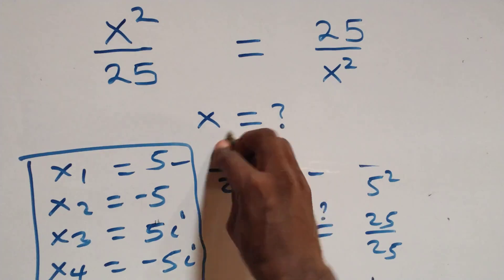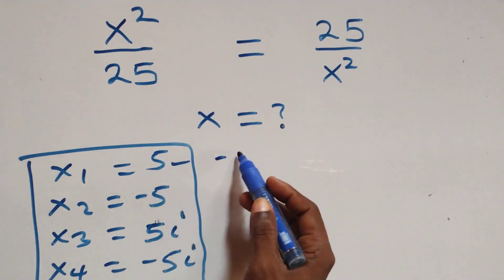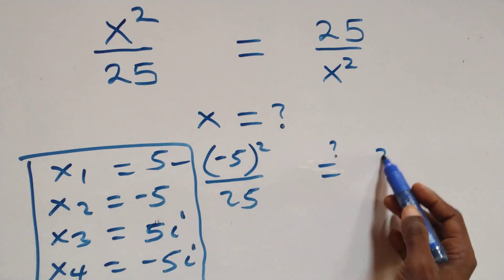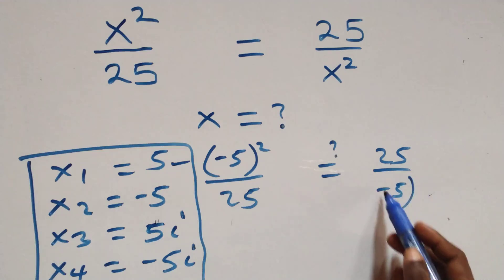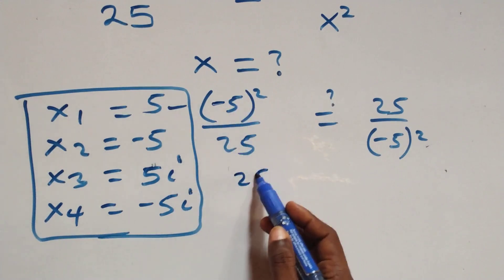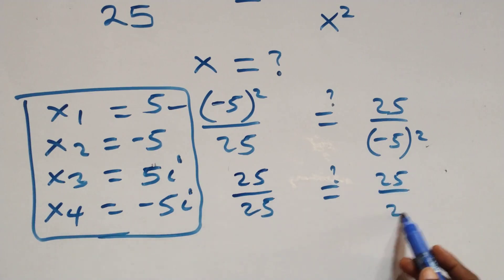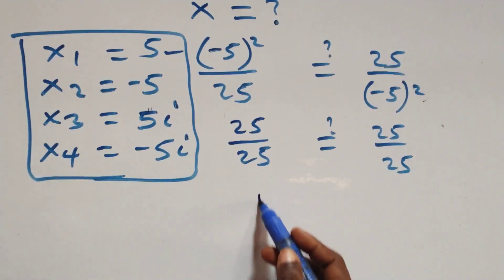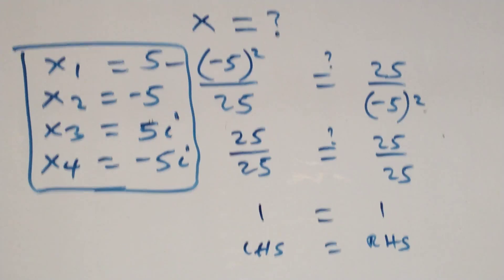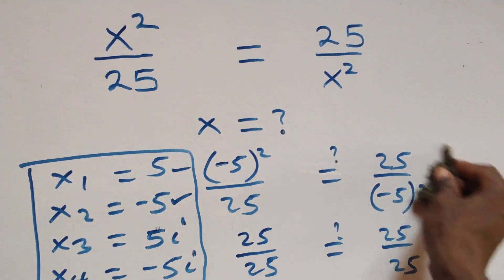Substituting x = −5: we get (−5)² over 25 = 25 over (−5)². Since squaring removes the negative, (−5)² = 25, so we have 25/25 = 1 equals 25/25 = 1. Left hand side equals right hand side, so x = −5 satisfies the given problem.